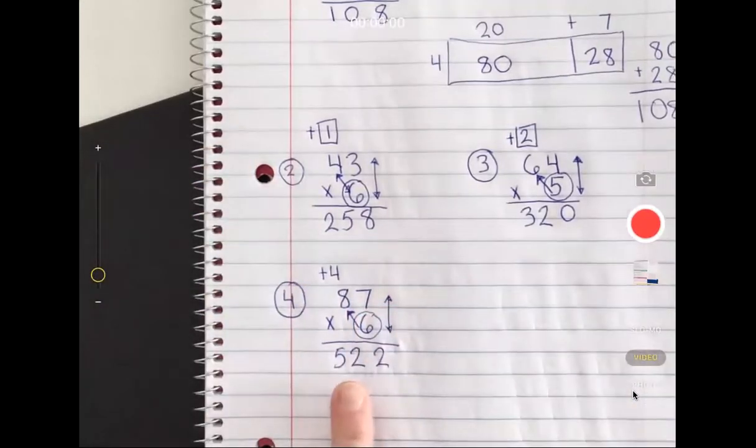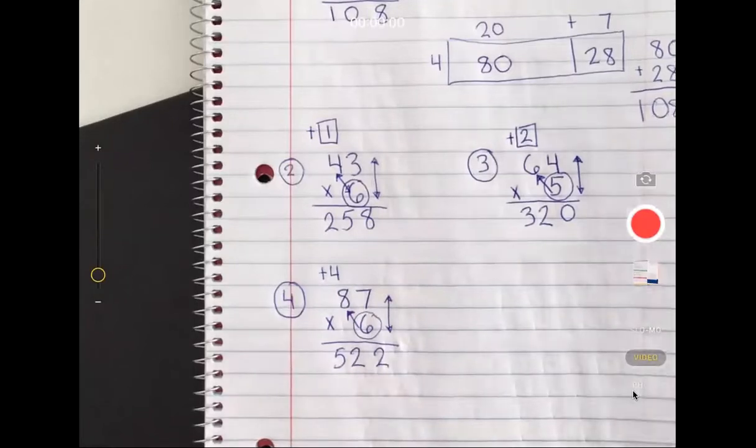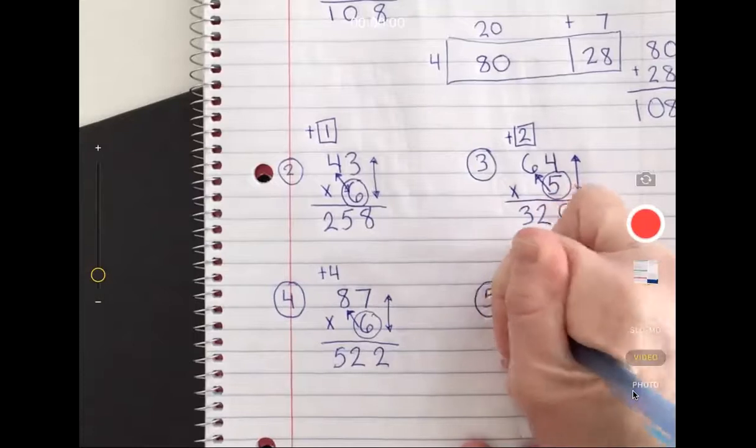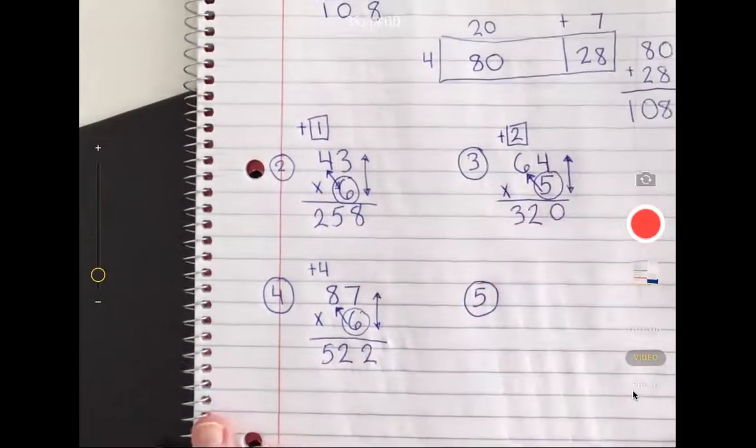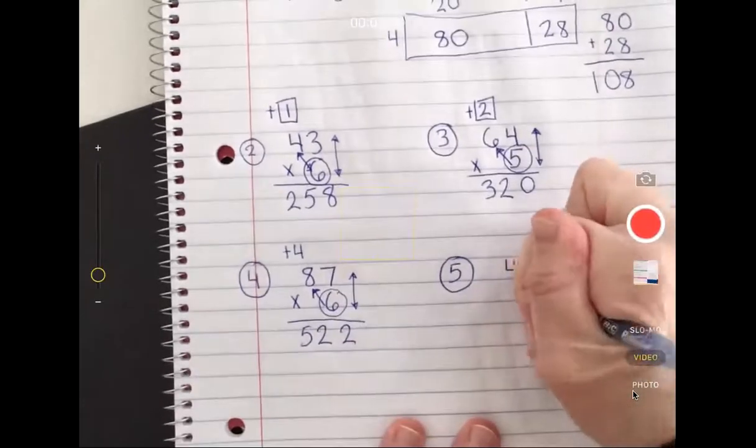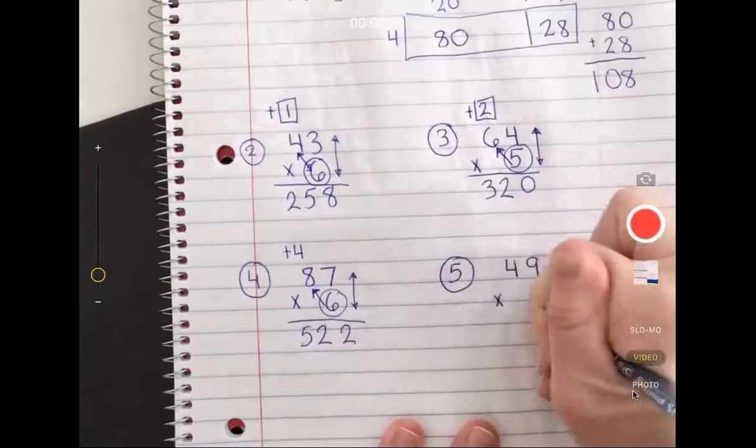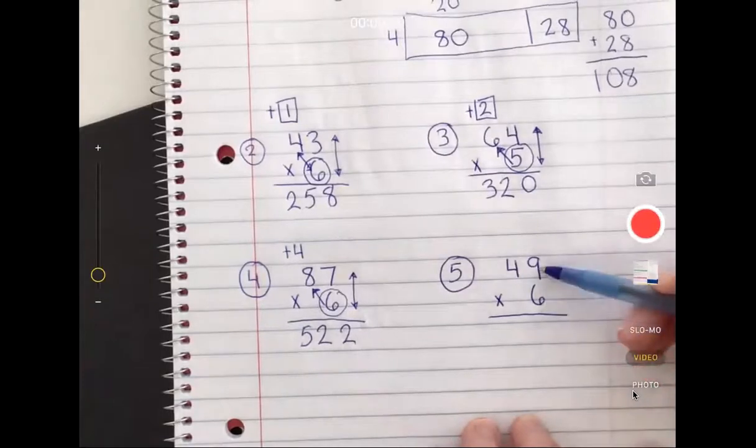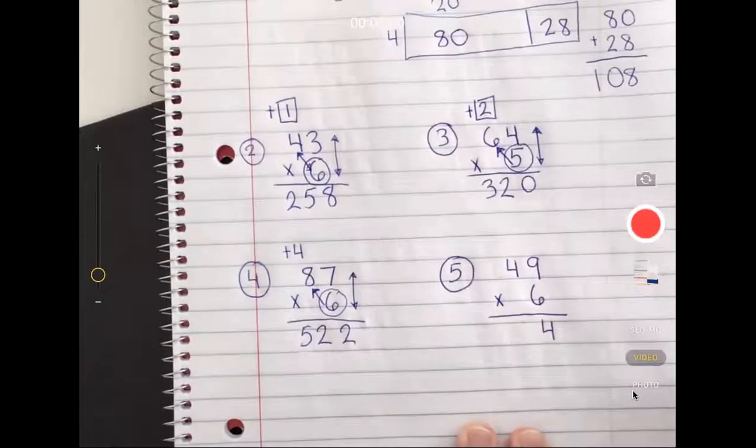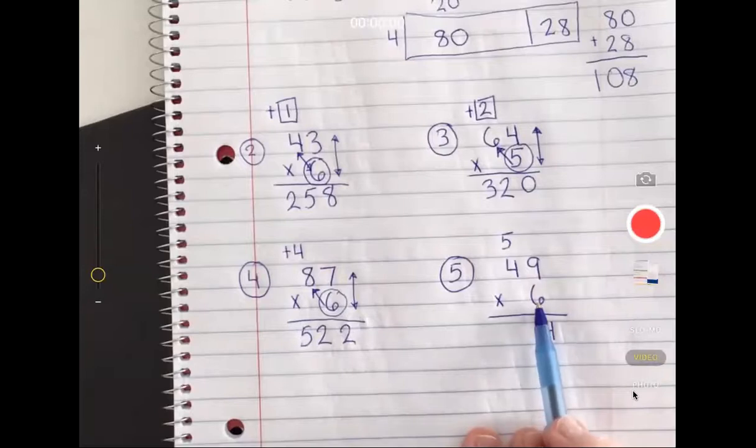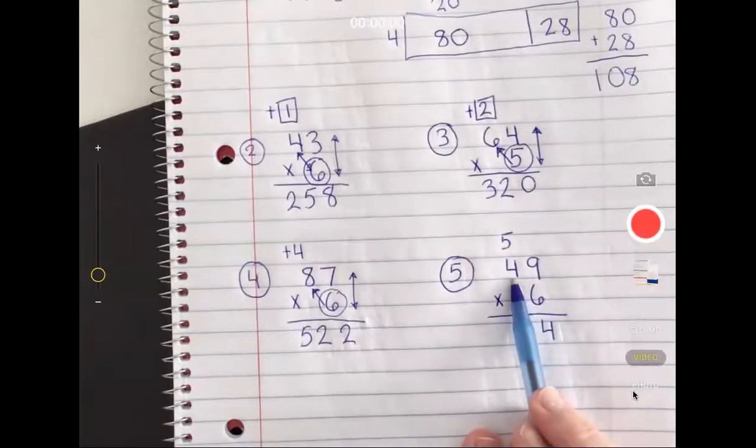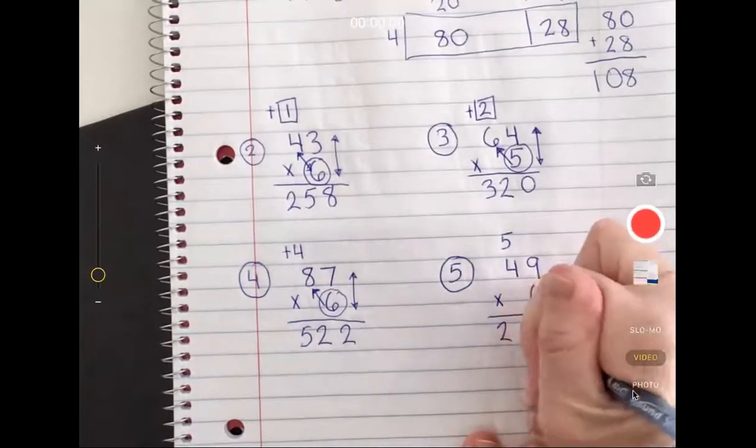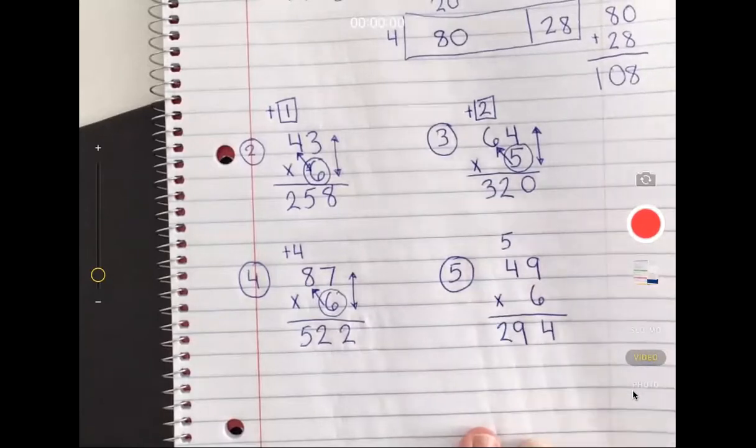Number five, this time I'm not going to do the arrows or the circling. Here's the shortcut method, let's do 49 times six. It's all lined up. I'm starting here, six times nine is 54, the four goes down, I'll bring the five up. I'll go diagonally next, six times four is 24 plus five more is 29, so my product is 294.